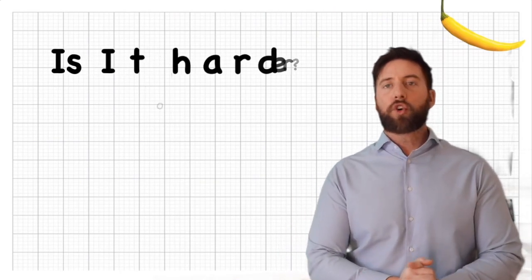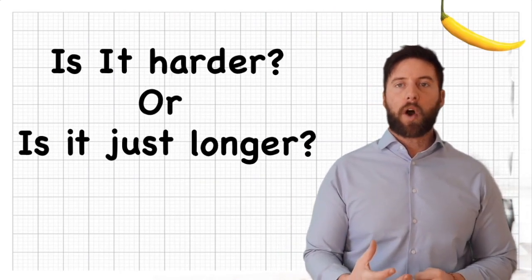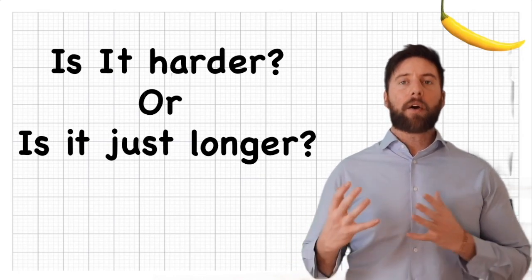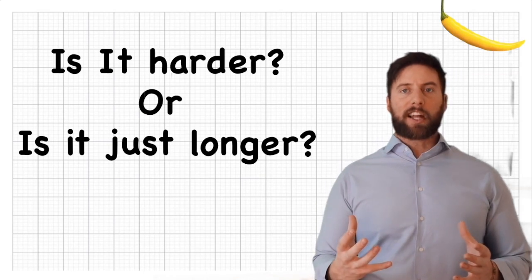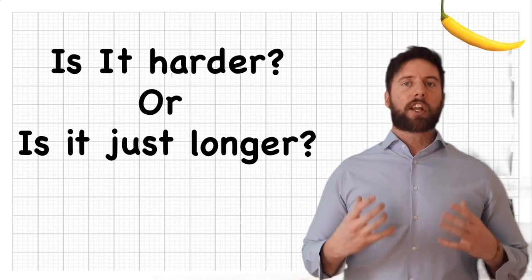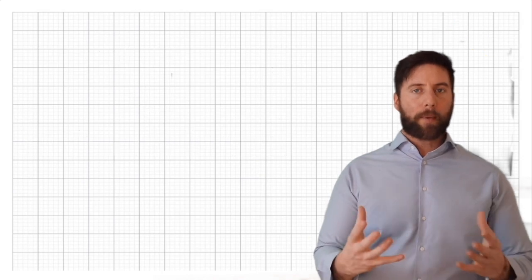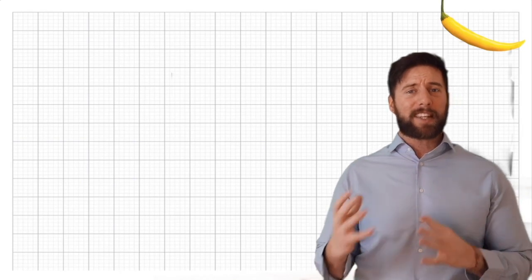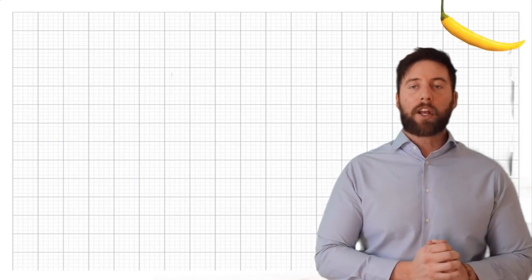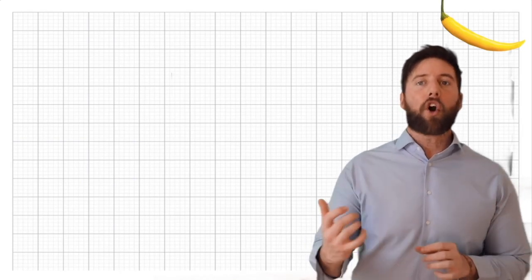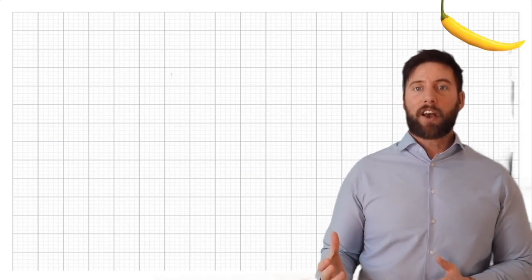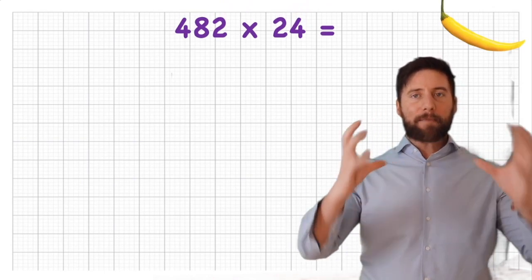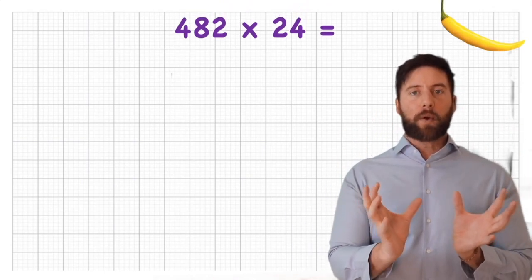That's the green chili challenge done. Now for the orange chili challenge, I want to highlight something important: is it harder or is it just longer? The orange chili example is actually just a little bit longer — it's not harder. I've given it orange because the key thing to understand is why this is only longer and not harder. Let's look at it: 482 times 24.